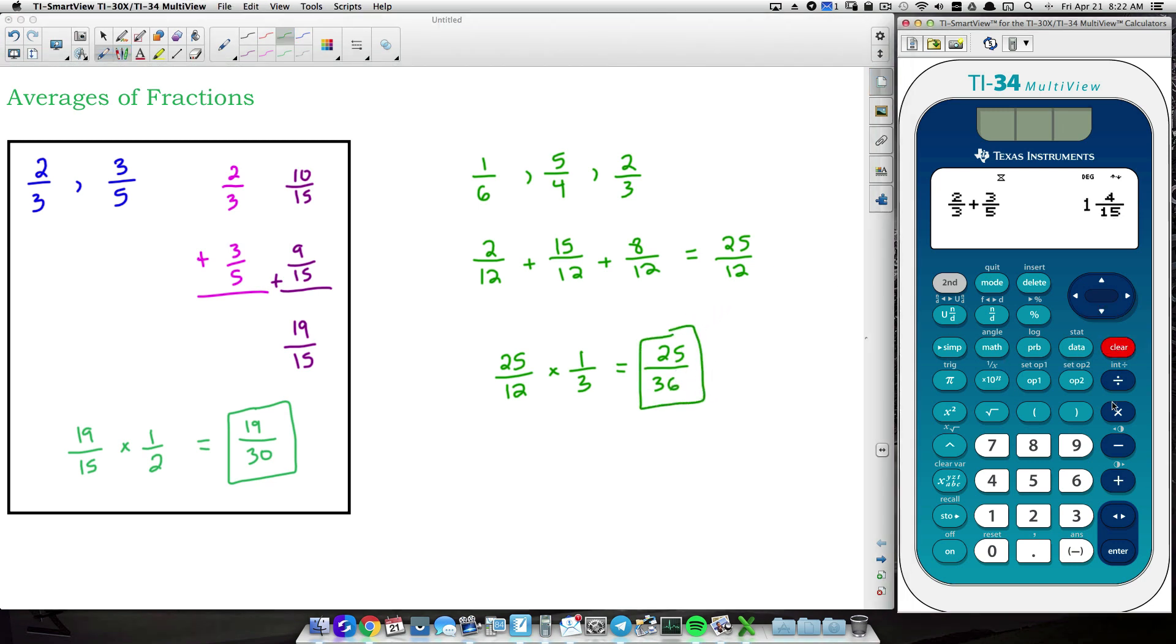And to show you that, I'll just come over here and work out that problem. So just clearing my calculator, we have 1 sixth plus 5 fourths. This works with improper fractions, obviously, too, because that was an improper fraction, plus 2 thirds.